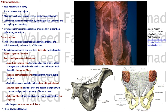The aponeurosis also has an opening called the superficial inguinal ring, which has two crura: the lateral crus attached to the pubic tubercle and the medial crus to the front of the pubis. They are joined by intercrural fibers — transverse fibers that prevent the opening from being widened.